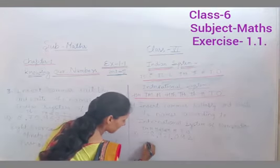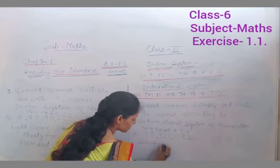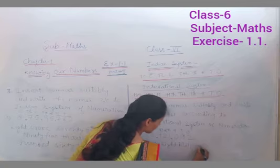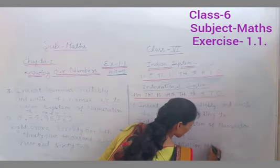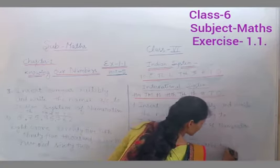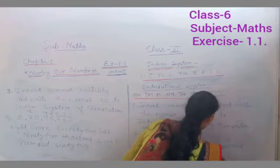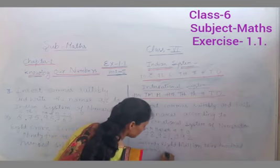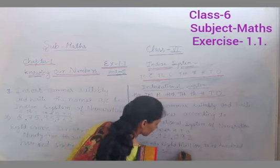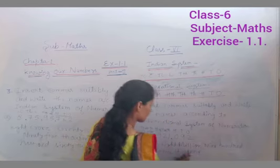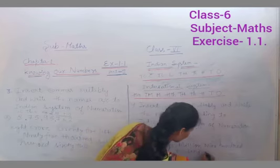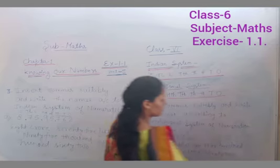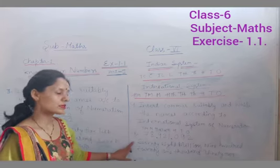To kaise likhenge? Seventy-eight million, nine hundred twenty-one thousand and ninety-two. This is the international system of numeration.